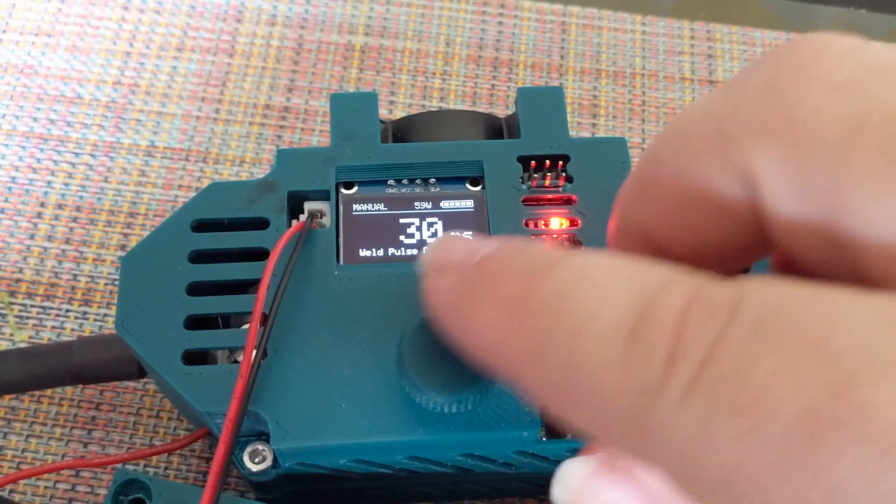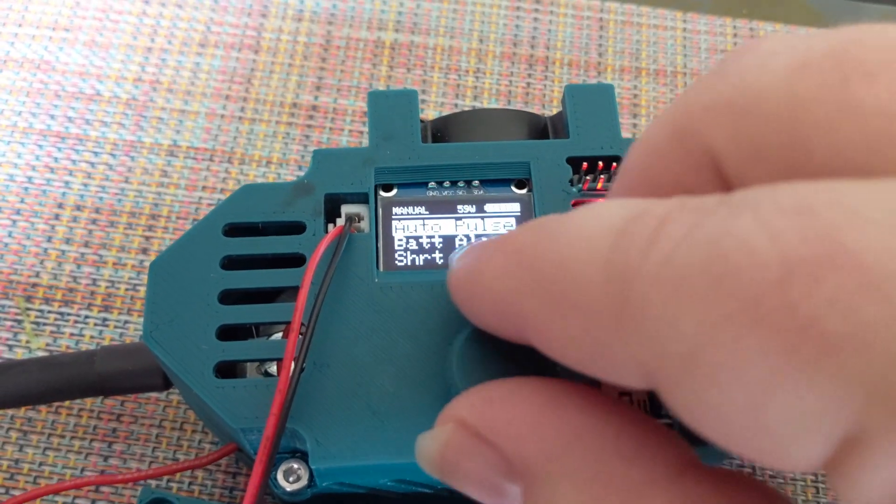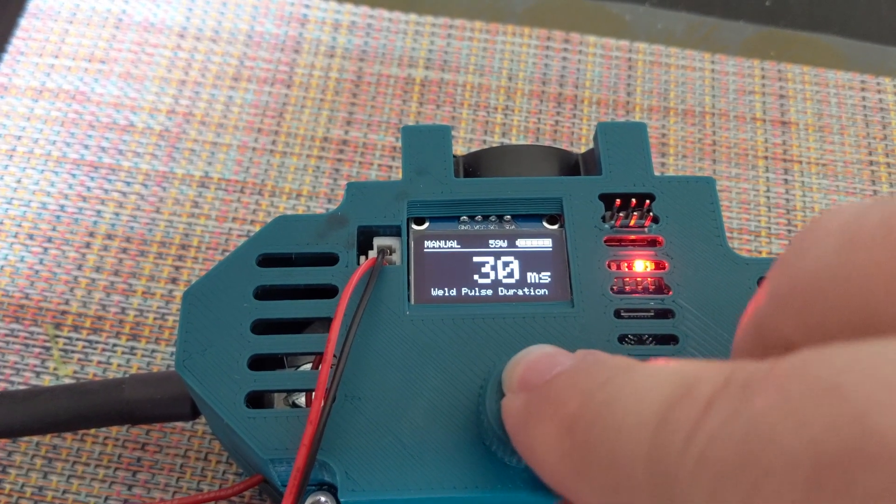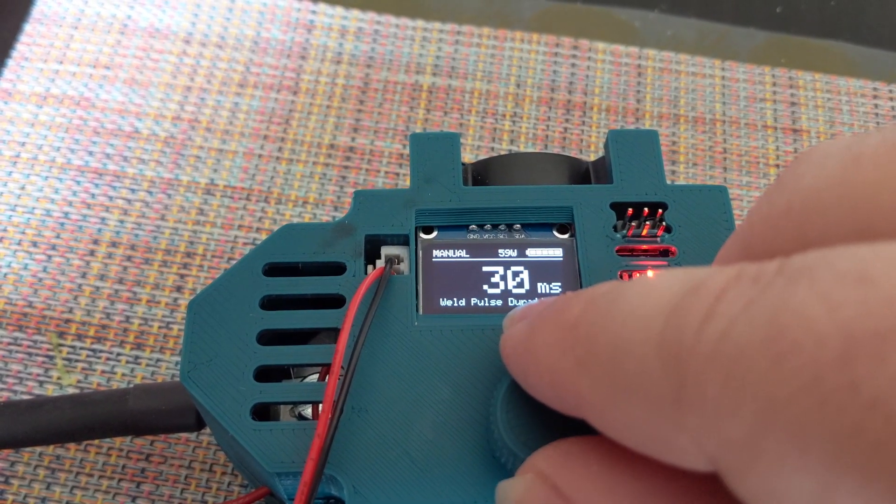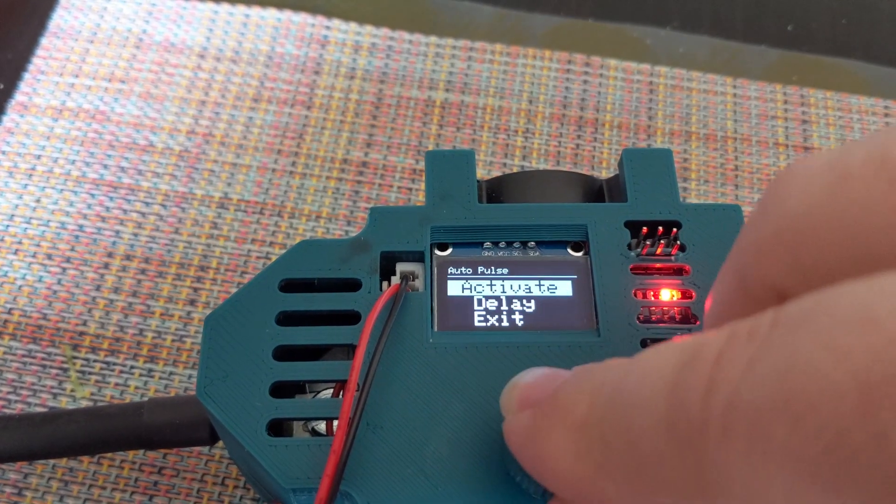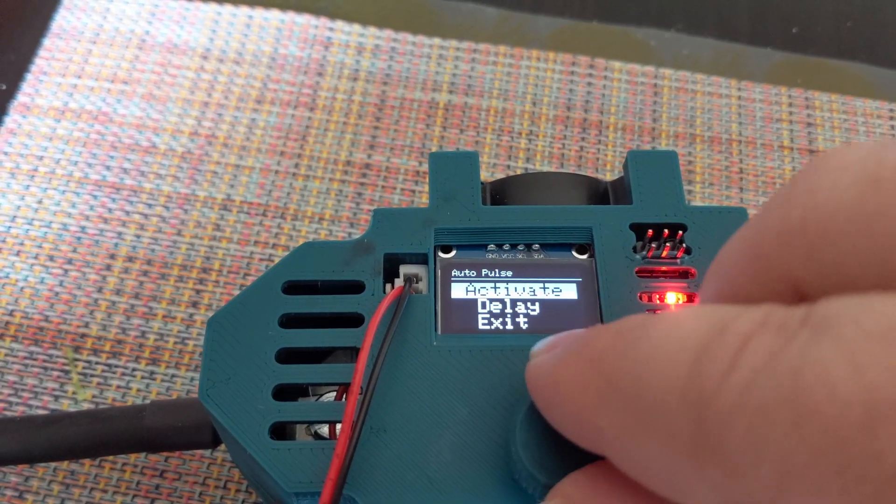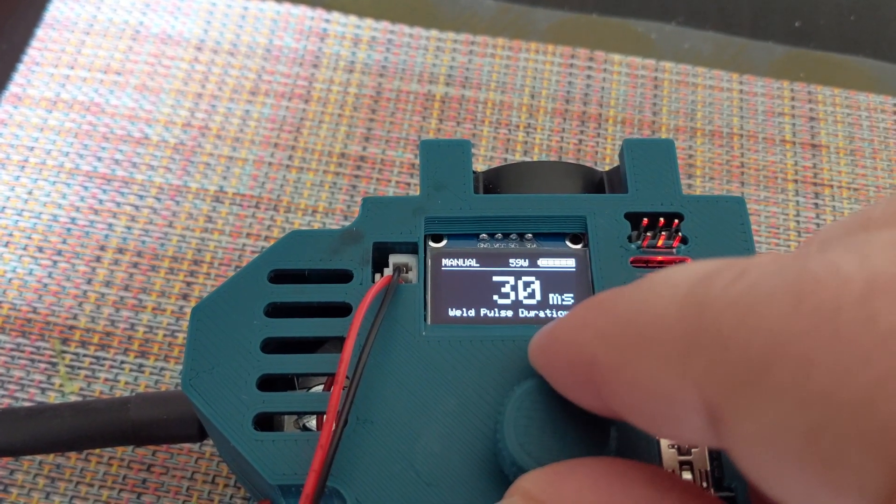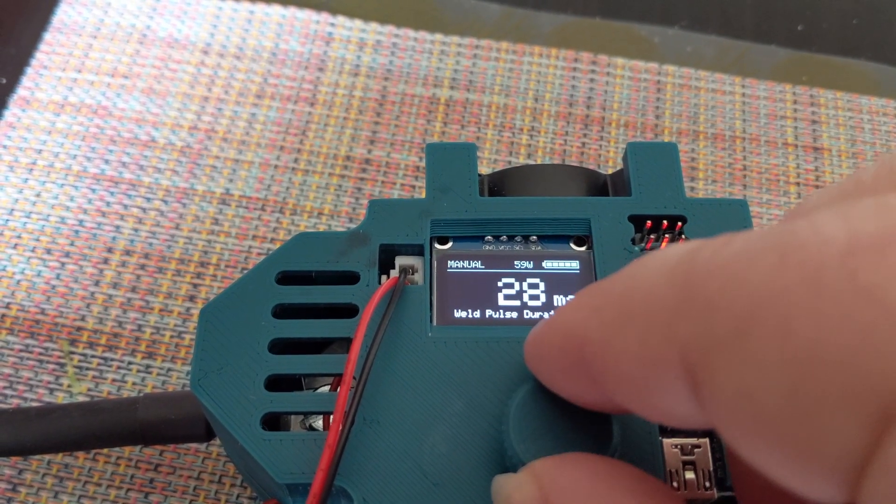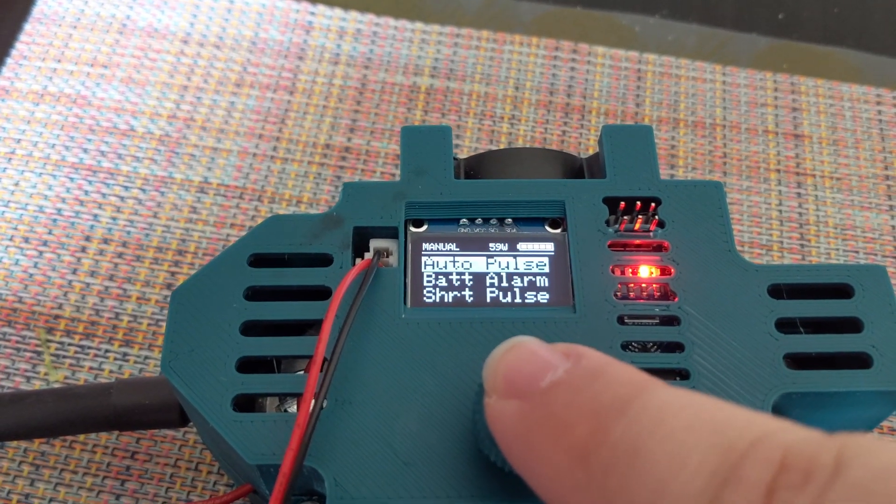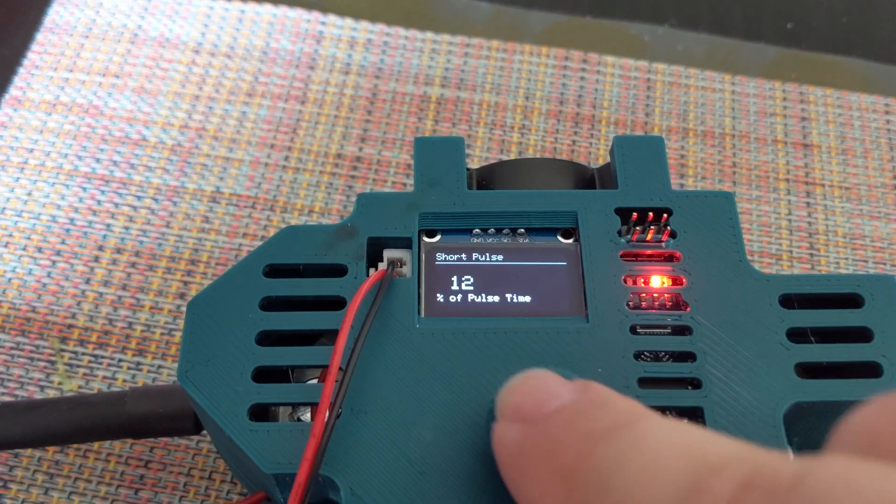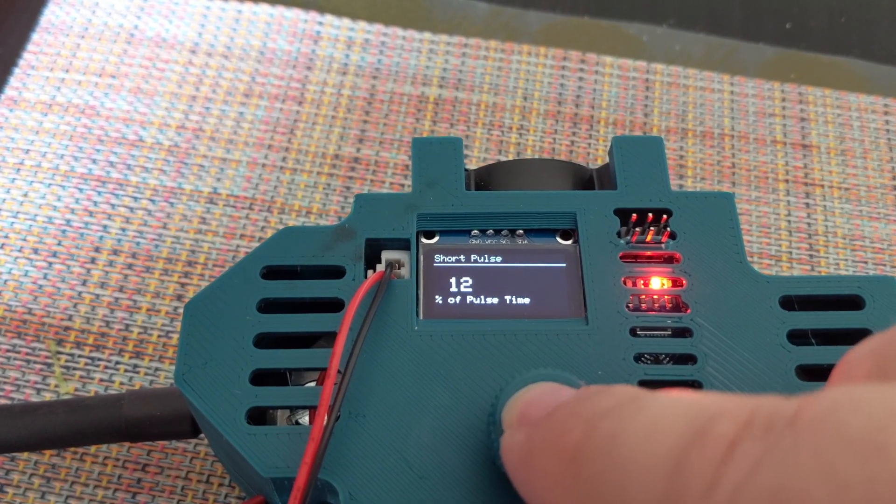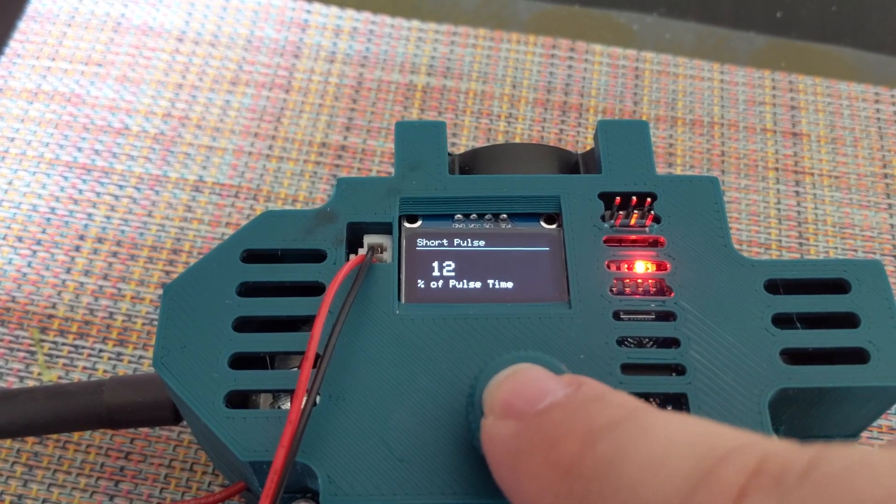This is the Arduino welder. You can select whether it auto pulses and set the delay for auto pulse. It's currently on manual pulse. You can set the weld pulse duration. Since we're going to try for a triple weld, I'm going to go for 30 milliseconds. You can also set the percent of pulse time that the short pulse is. I'm going to use 12%.